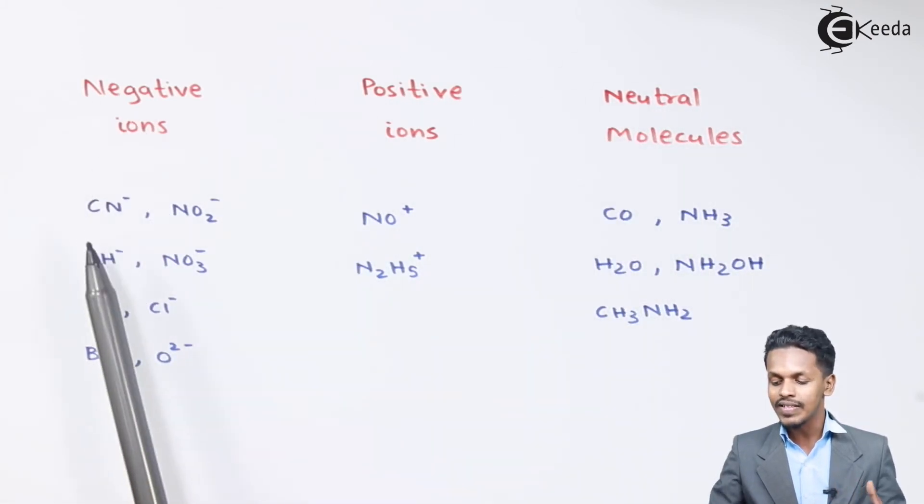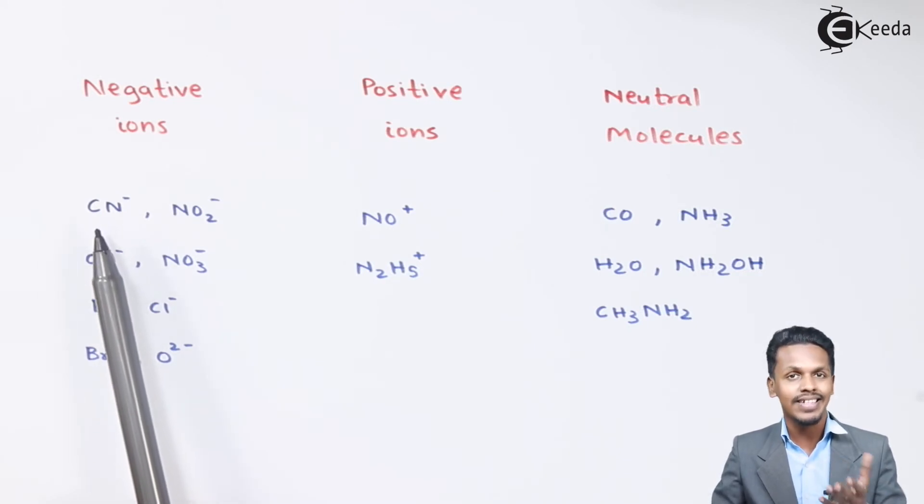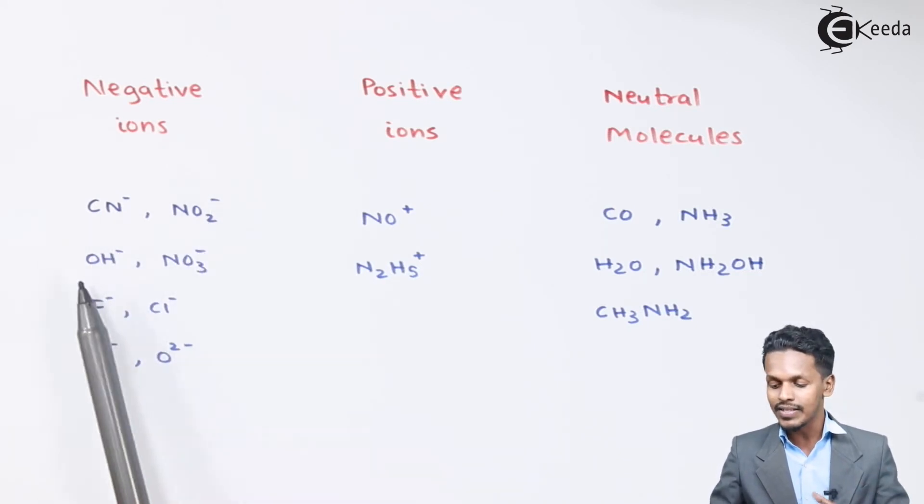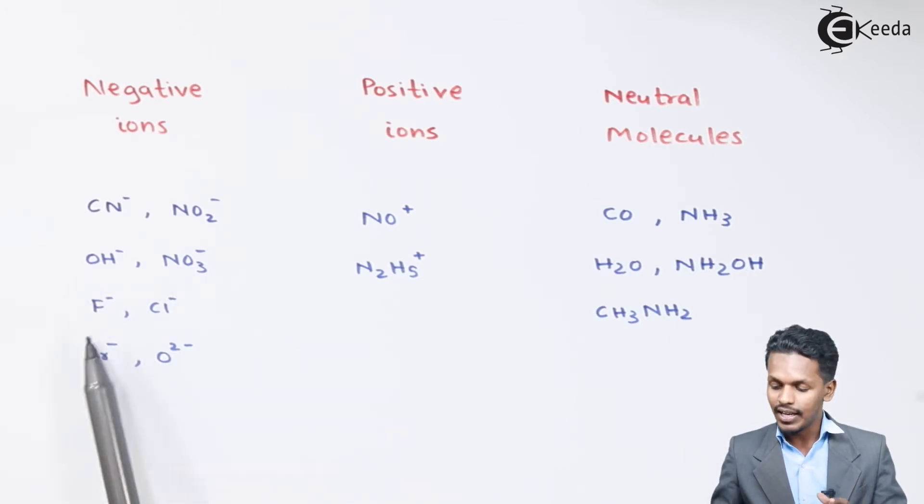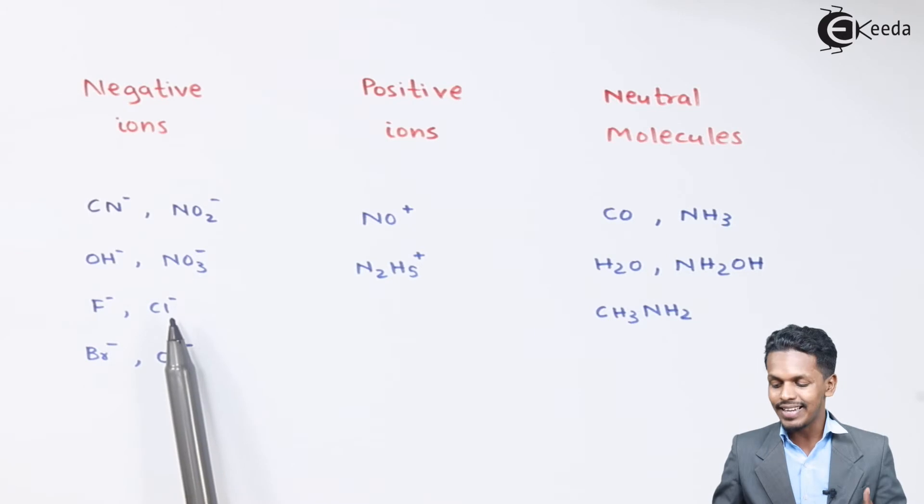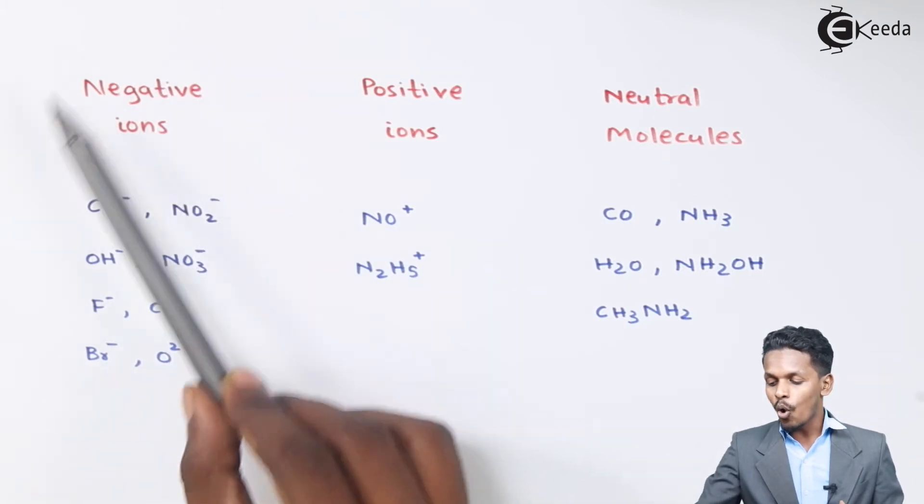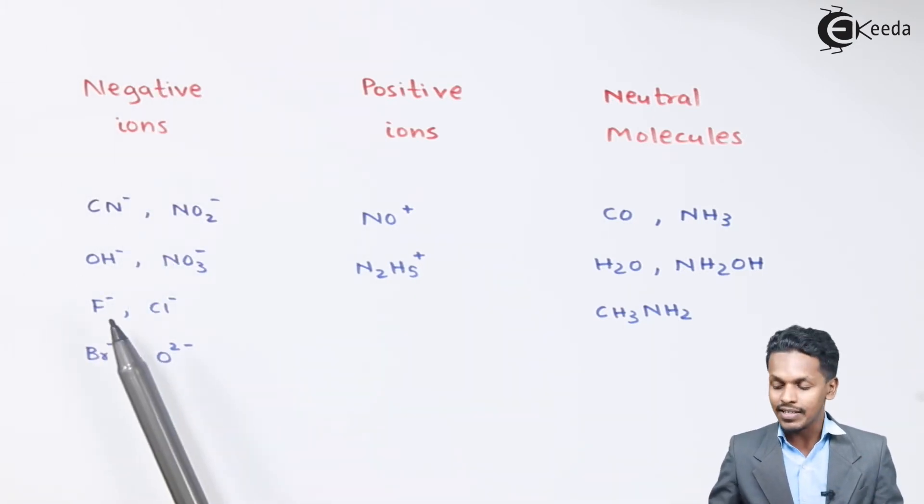Talking about the negative ions, CN minus is cyanide, nitrite is NO2 minus, OH is hydroxyl, NO3 is nitrate, F minus is fluoride, Cl is chloride, this is bromide and this is oxide that is O2 minus. So this all are nothing but the negative ion ligands.